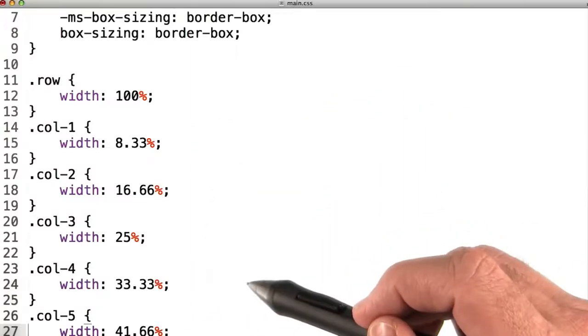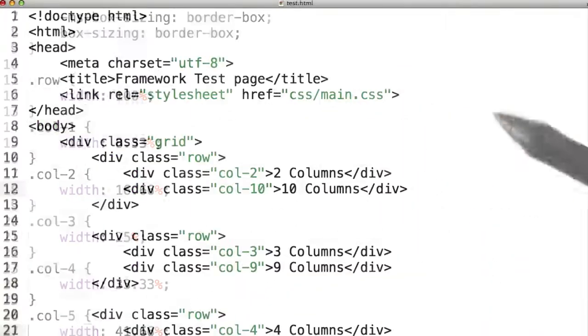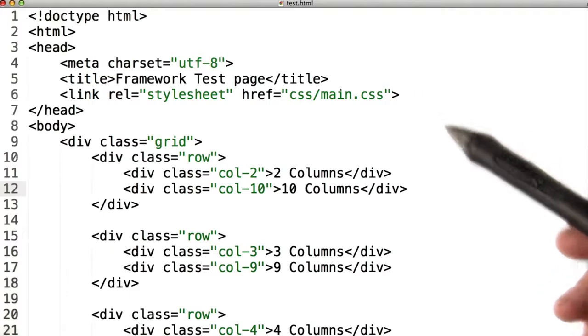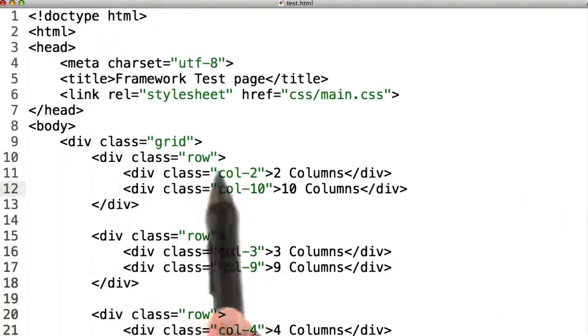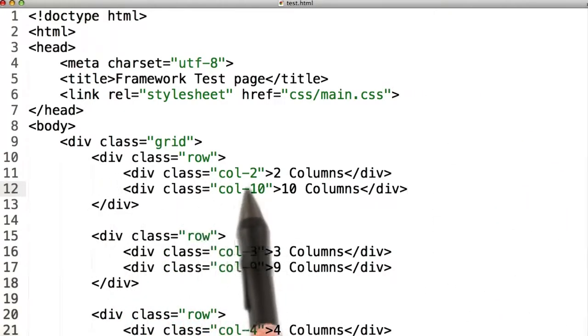Now that we've got our CSS set, let's get a sample page to see if this works. In the instructor notes, you'll find the HTML that you see right here. Notice that we've got an outer class of row, and then two inner columns: column two and column 10.